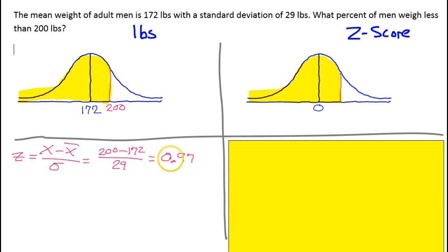Of course, that's really close to 1, about one standard deviation. This is about one standard deviation above the mean. Let's go ahead and put this 0.97 on our Z-score picture.